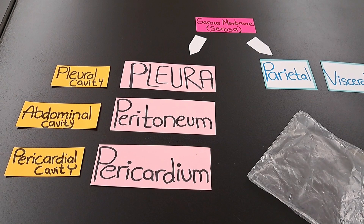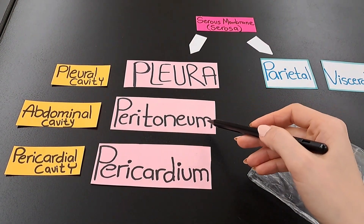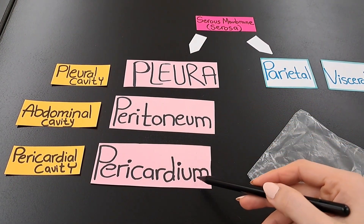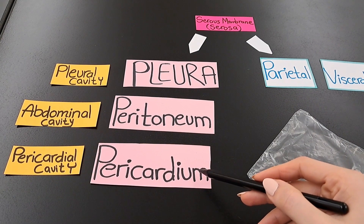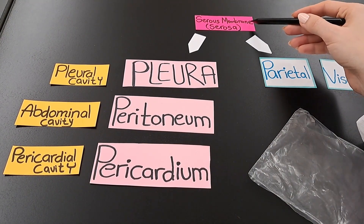The pleura, the peritoneum, and the pericardium are examples of serous membranes.